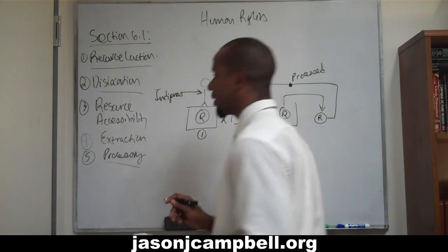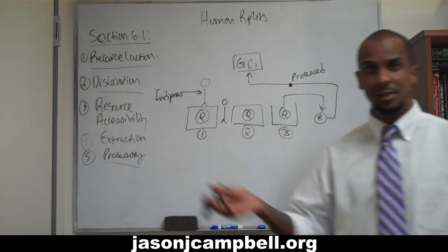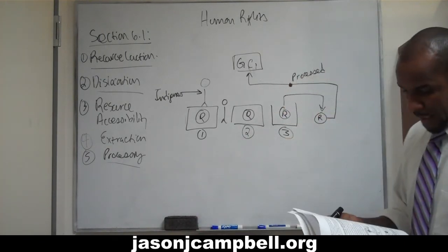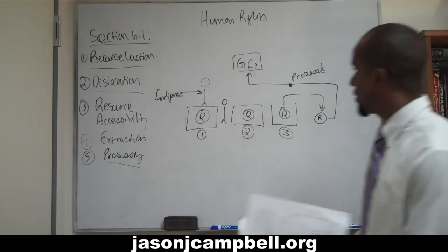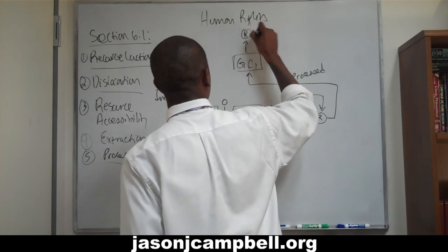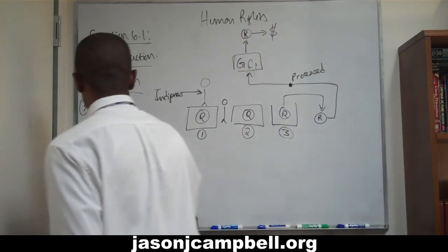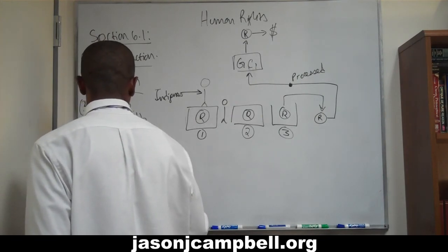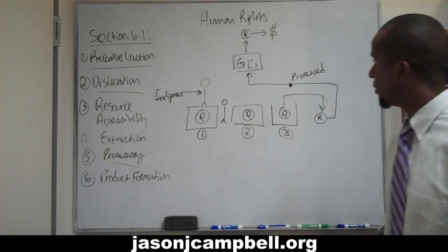Specifically what we're talking about is processing of the raw material — processing the rubber, processing sugarcane, processing whatever the resource may be. And then finally, number six is product formation. We take this natural resource and transform it into capital. We transform that product into capital.